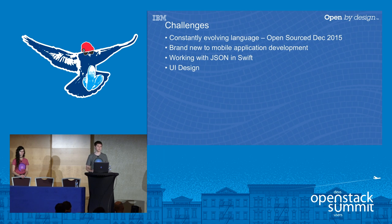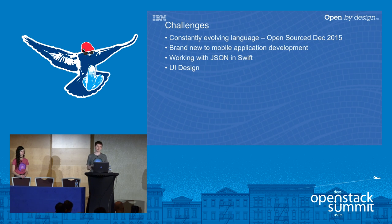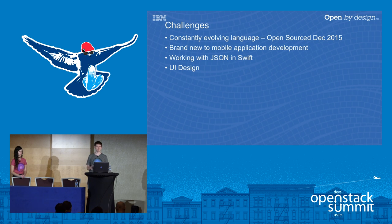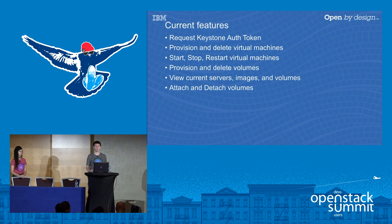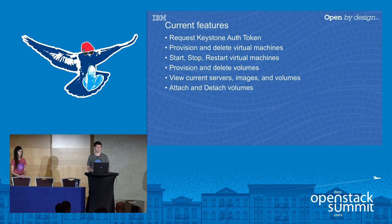Working with JSON in Swift was a challenge — JSON isn't natively built into Swift, and through the current release there were issues making it work well, though Swift 4 should significantly improve this. UI design was also a challenge since we hadn't worked on mobile apps before. Our current features include Keystone auth token, provision and delete virtual machines, start/stop/restart VMs, provision and delete volumes, view current servers, images and volumes, and attach and detach.